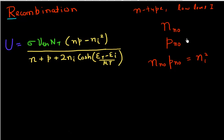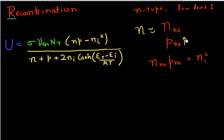Under low-level injection, I can assume that my density of majority carriers — that is, the density of electrons — does not change much even when I'm in non-equilibrium, so N roughly remains the same as what it was in equilibrium. Of course, there would be a large change in the number of holes, which is the minority carrier. Let me now substitute and see what's happening when recombination is occurring.